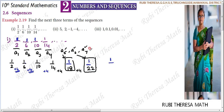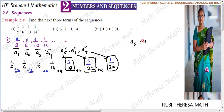So the 6th term: again plus 4 to the denominator, 18 plus 4 equals 22, so 1/22 is the 6th term. The 7th term: again plus 4 to the denominator, 22 plus 4 equals 26, so 1/26 is the 7th term. Therefore: A5 = 1/18, A6 = 1/22, A7 = 1/26.